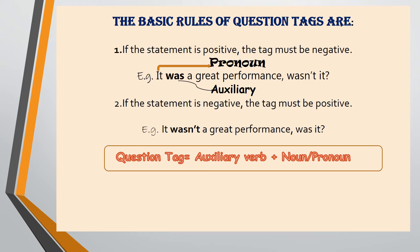The correct way to form a question tag is to identify if there is an auxiliary verb and place that first, then we add the noun or the pronoun. In this example, 'was' is the auxiliary verb that needs to be changed to the negative form 'wasn't,' and then we add the pronoun to it.